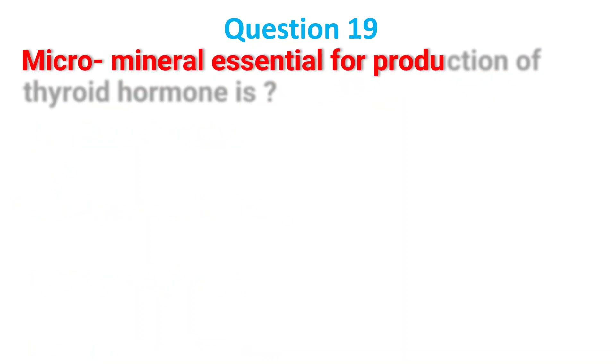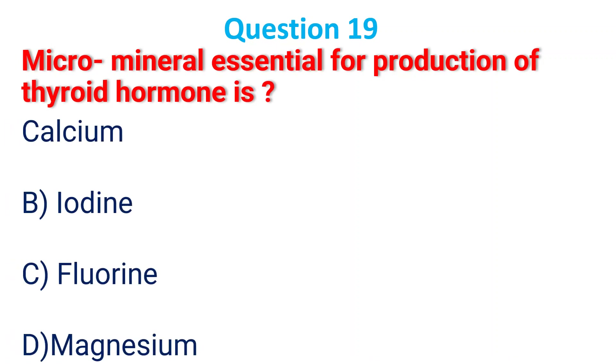The micromineral essential for production of thyroid hormones is: A. Calcium; B. Iodine; C. Fluorine; D. Magnesium. The answer is B, iodine.